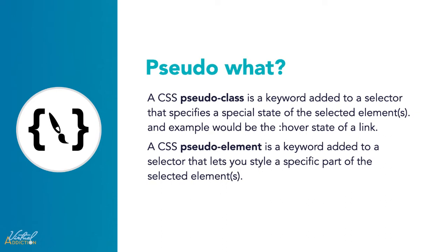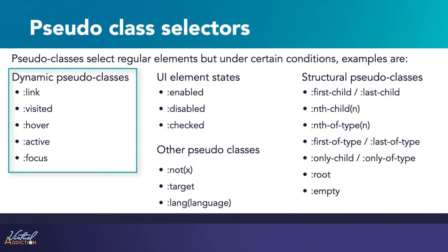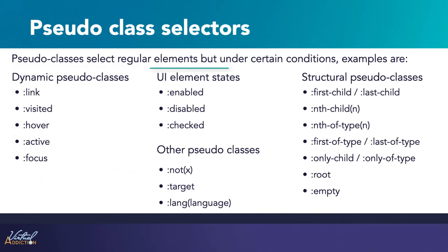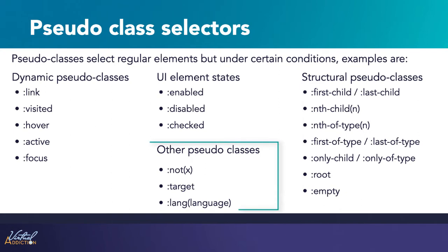Pseudo classes select regular elements but under a certain condition, like when they're positioned relative to siblings or under a particular state. Here's a list of pseudo classes in CSS3. We already covered the dynamic pseudo classes, commonly used on links. We also have UI element state pseudo classes — things like enabled, disabled, and checked, usually used with forms. Then we have structural pseudo classes: first-child, last-child, nth-child, nth-of-type, only-child, only-of-type, root, and empty. And other pseudo classes: not, target, and language. We'll look at a couple of these on an actual web page.